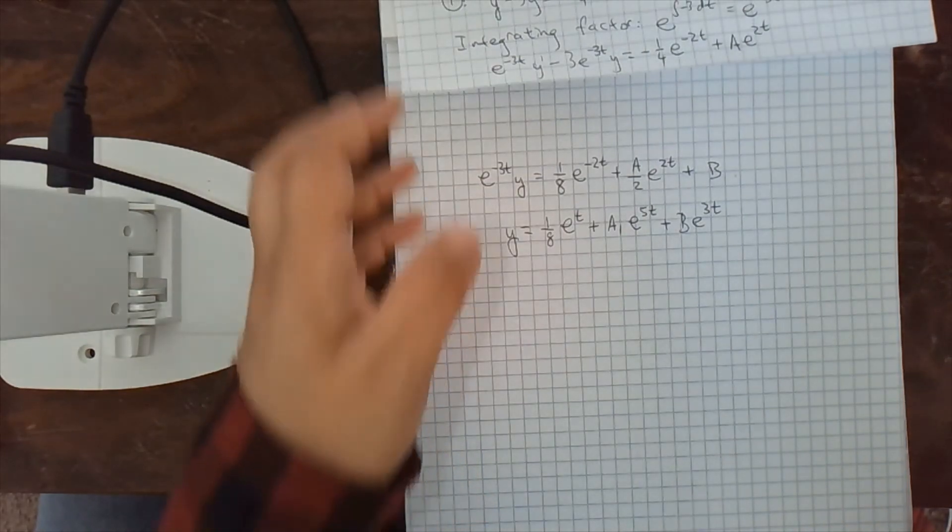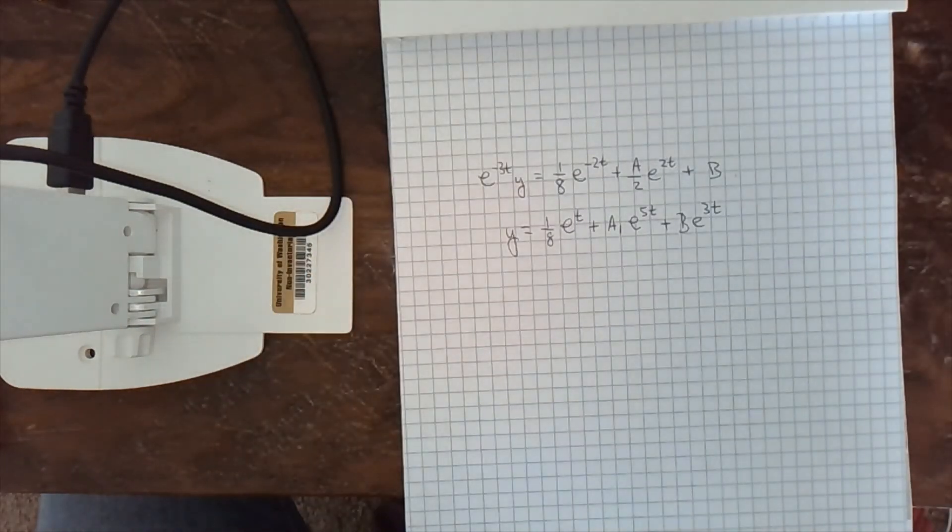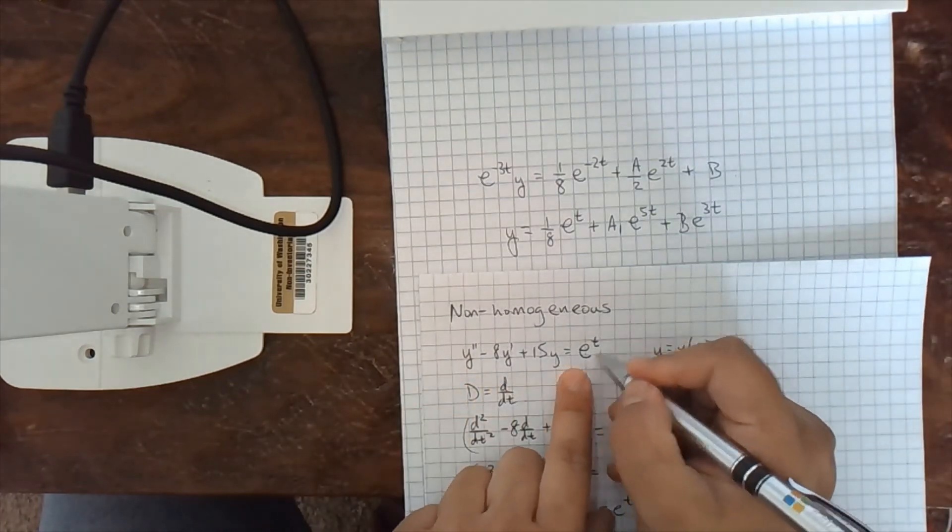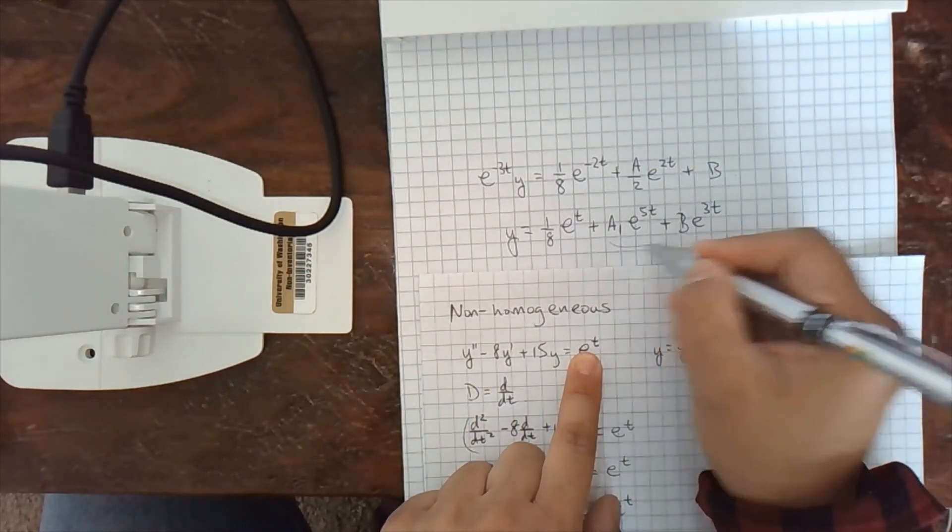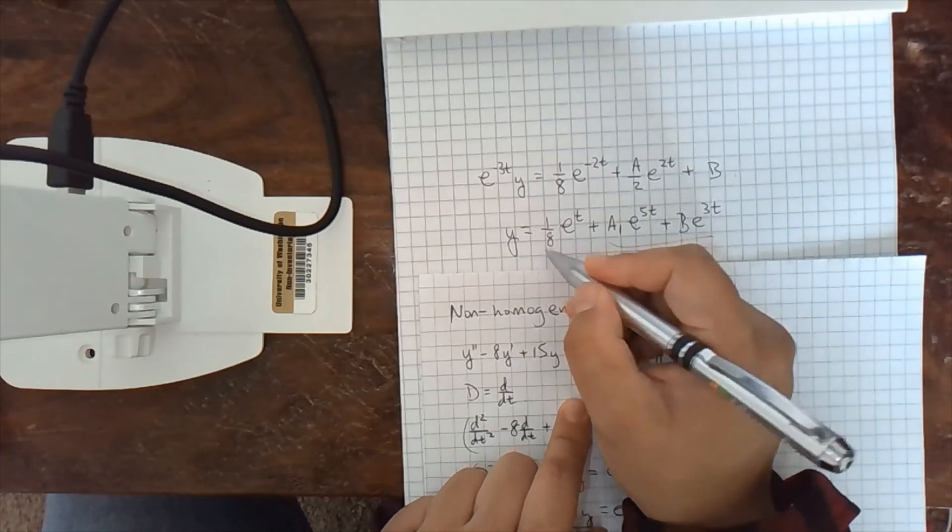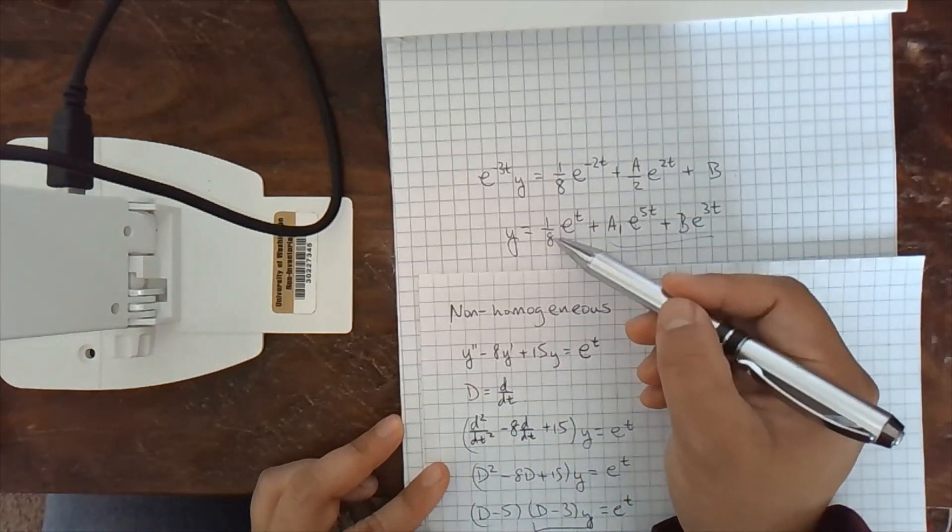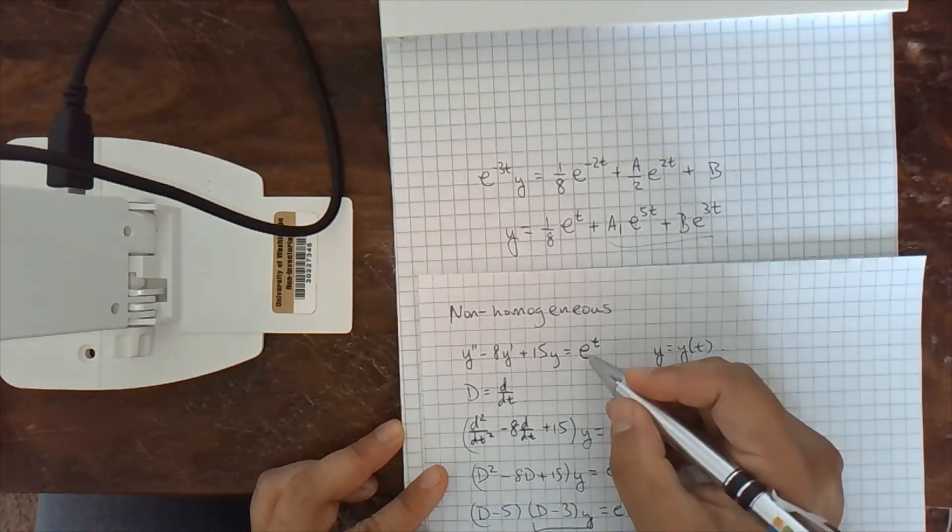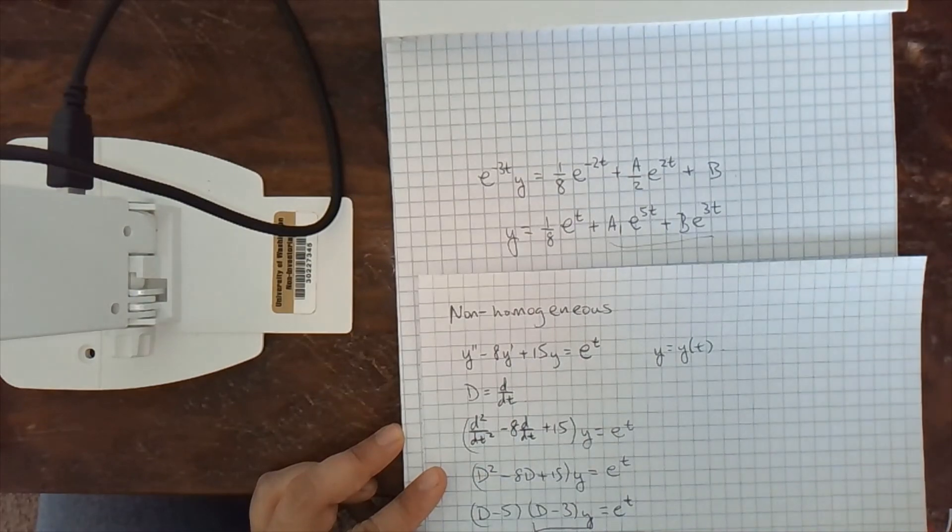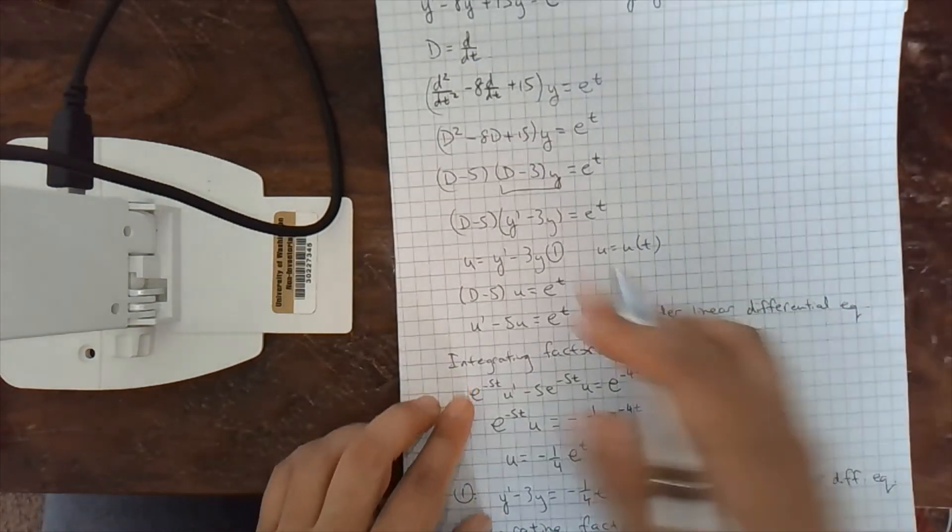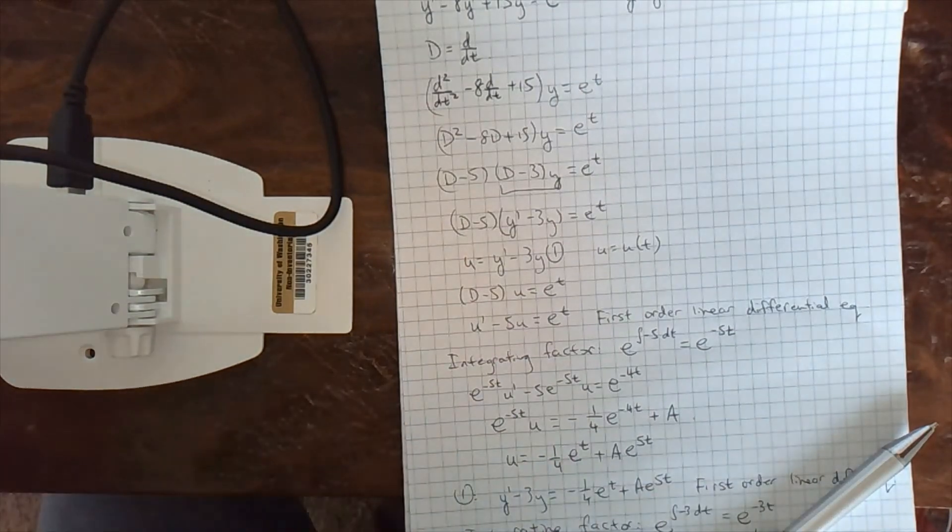So it looked kind of like our solution to the when it was homogeneous, we had 0. We had basically this part, but you get another term. And you can't really predict what this 1 eighth is going to be based on the function over here. So that's kind of cool. We needed these linear operators to be able to solve this problem.